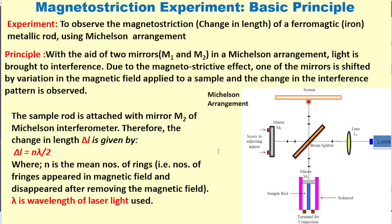This is the Michelson arrangement where we have a laser source. Using this beam splitter, one beam goes towards mirror M1 and one beam goes towards M2. After reflection we get the interference pattern on the screen.